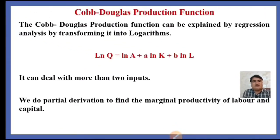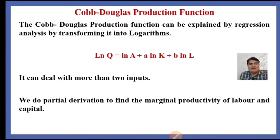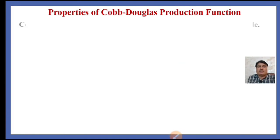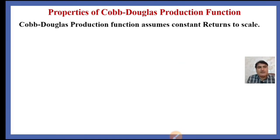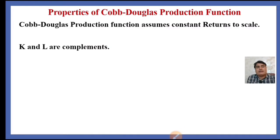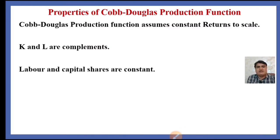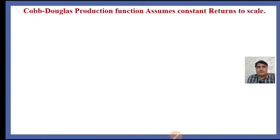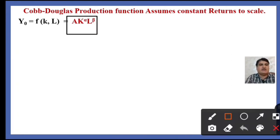We do partial derivation in order to find the marginal productivity of labor and capital. The properties of the Cobb-Douglas production function are: it assumes constant returns to scale, capital and labor are complements, and labor and capital shares are constant. We shall prove these. If output is a function of capital and labor, the general Cobb-Douglas form is A * K^alpha * L^beta.